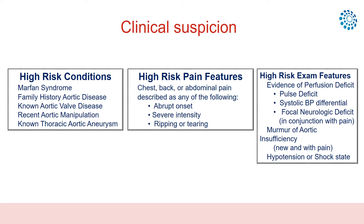Clinical data is useful to assess the prior probability of Acute Aortic Syndrome. The European Society of Cardiology guidelines propose a risk assessment tool based on three groups of information: predisposing conditions, pain features, and clinical examination. A scoring system from 0 to 3 reflects how many groups are involved, with higher scores corresponding to increasing pre-test probability.